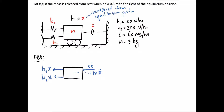We only mark forces in the direction of vibration — that's our free body diagram, with the positive x direction noted. The next step is to sum the forces equal to mass times acceleration. The damper and both springs act in the negative x direction, giving us negative c·x-dot minus k1·x minus k2·x on the left, and m·x-double-dot as positive on the right.